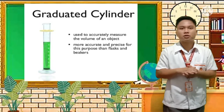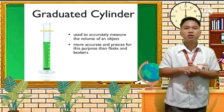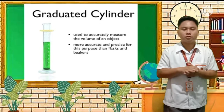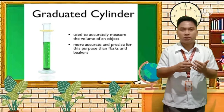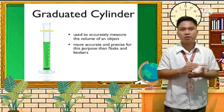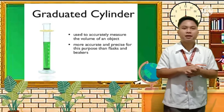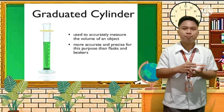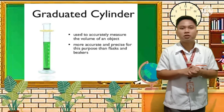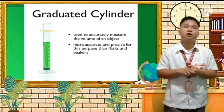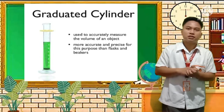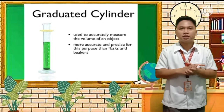The graduated cylinder is easy to use, and in my experience it is most commonly used when conducting experimentation for measuring the volume of a substance. It has measurement markings. Among our discussed apparatus, many have measurements for the right volume needed in experimentation. The graduated cylinder is more accurate and precise for this purpose than flasks and beakers.